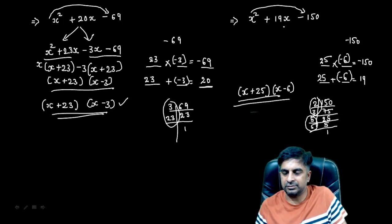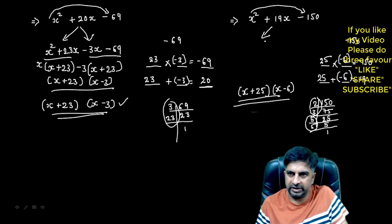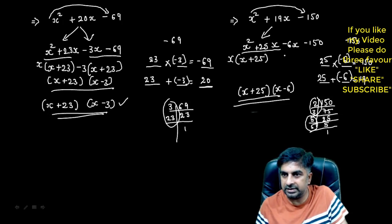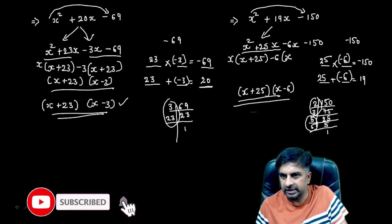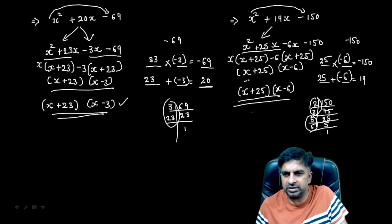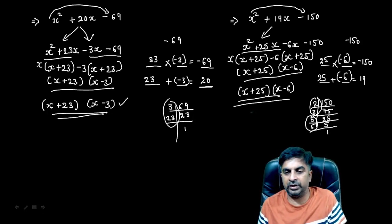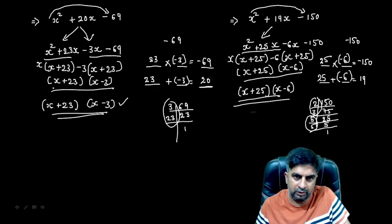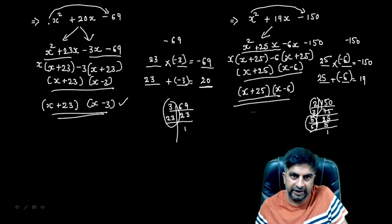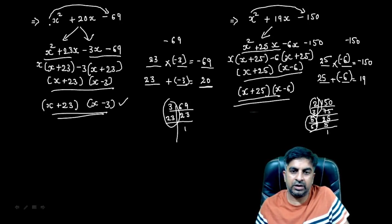If you want to solve it fully: write +25x and −6x, then x² + 25x − 6x − 150. Take out x as common from the first two terms, leaving x + 25. Take out −6 as common from the last two terms — making the bracket x + 25. Take out x + 25 as common, and x − 6 is the other factor: (x + 25)(x − 6). Remember, this short trick only works when the coefficient of x² is 1. For other cases, there is another trick which I will explain in my next video.